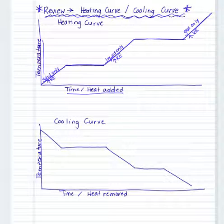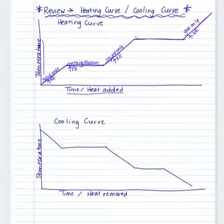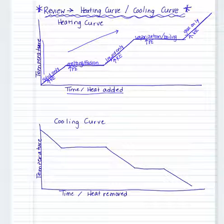Then we have our two flat lines, which represent our phase changes. The first phase change on the heating curve is melting — another word for melting is fusion. The second phase change is vaporization, also known as boiling. Vaporization usually takes longer than melting because it takes more heat to overcome the intermolecular forces. Both phase changes increase in potential energy, and this heating curve represents an endothermic curve because heat is being absorbed by the substance throughout the time period we're plotting.